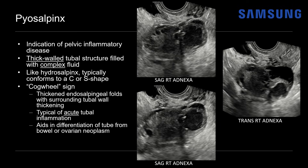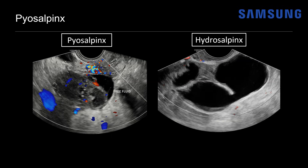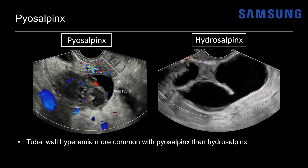Comparing back to the second hydrosalpinx case with color Doppler, there wasn't much flow, but with piosalpinx we do see increased flow about the thickened wall because this is an active inflammatory process — tubal wall hyperemia is more typical of piosalpinx. It's also common to see associated oophoritis, which is inflammation of the ovary, and when the tube is adherent to that ovary we describe it as a tubo-ovarian complex.